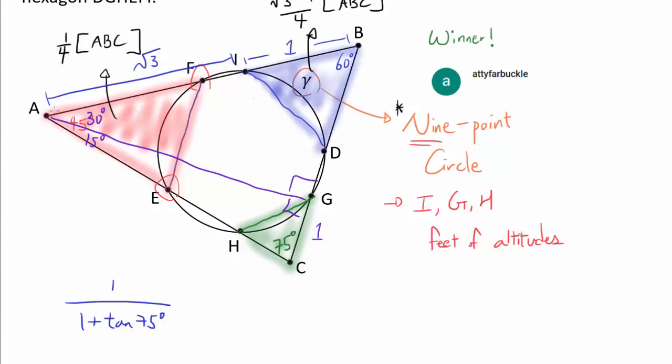So if we let GC be 1, we know the altitude once again is tangent of 75. And that's telling us that BG, so this length, is tangent of 75 divided by square root of 3. So we now have a factor 1 over (1 plus tangent of 75 over square root of 3). And we know to this we are going to multiply area of ABC.